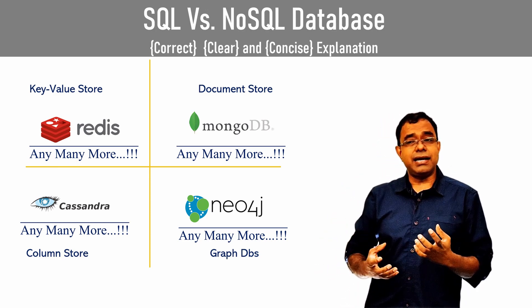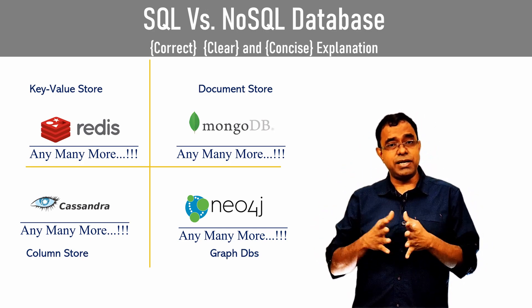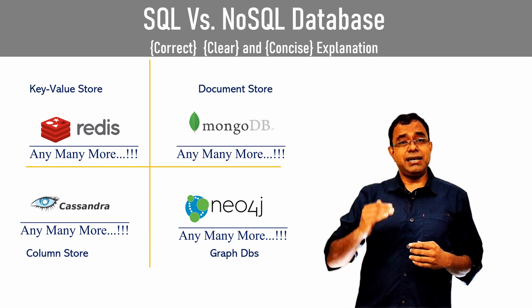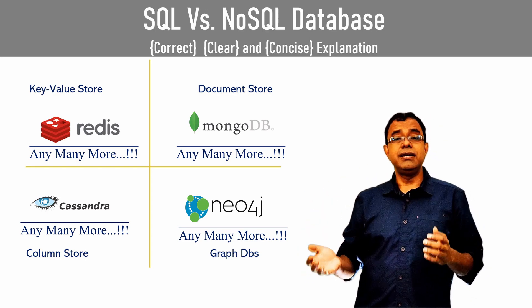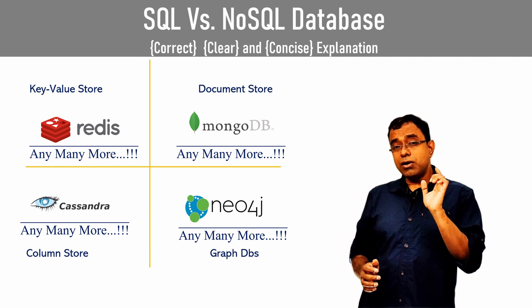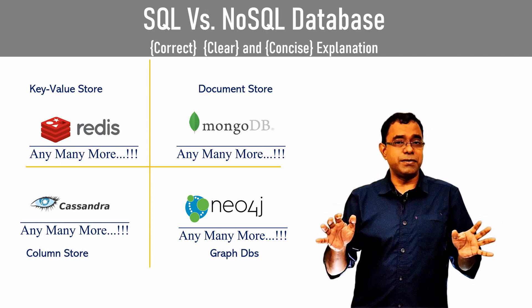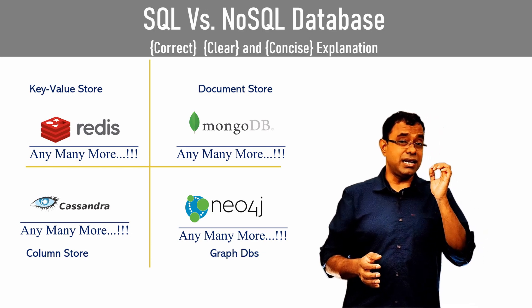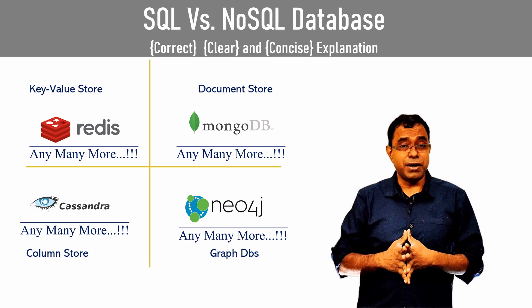Column store is very interesting. When we talk about MySQL data and you have 20 or 30 fields in a particular table, and you want to access only one field, all the rows will be fetched — it is row-centric, not column-centric. But in column data stores, you can actually fetch a single column. Column store means different columns can be stored independently, and there are various key mechanisms available.